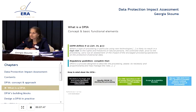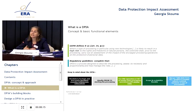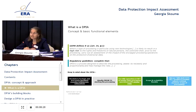Ideally, the DPIA has to be carried out prior to the introduction of the data processing operation or system — this is, of course, the ideal situation. Many times we see that at the same time the first feasibility study of a project finishes within an organization, they also initiate the data protection impact assessment. It can be applied to only one data processing operation, but it may also be applied to a set of operations.